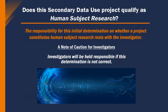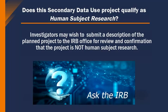As stated in the Standard Operating Procedures for UVA's Human Research Protection Program, the responsibility of this initial determination on whether a project constitutes human subject research rests with the investigator. However, we want to include a note of caution: investigators will be held responsible if this determination is not correct. Investigators may wish to submit a description of the planned project to the IRB Office for review and confirmation. If there's any ambiguity, it's highly recommended that the investigator reach out to the IRB to make this determination on whether the study qualifies as human subject research.